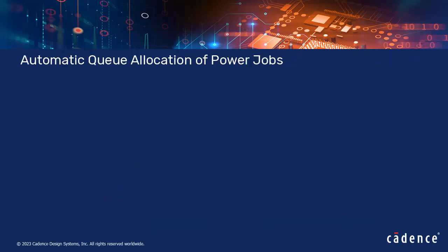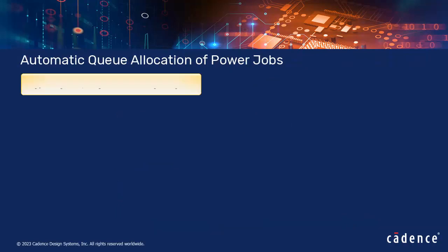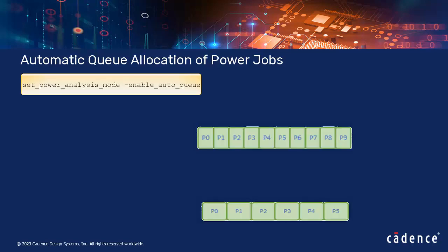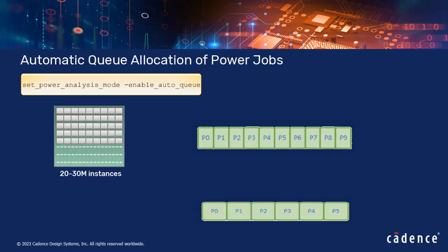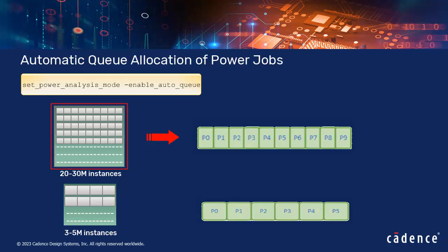You can now automatically determine the queue for power jobs using the EnableAutoQueue parameter of the SetPowerAnalysisMode command. This parameter is beneficial when there are uneven power block partitions — for example, if some blocks have 20 to 30 million instances while others have only 3 to 5 million instances. Using this feature, bigger blocks will be automatically assigned to a bigger queue and smaller blocks to a smaller queue, resulting in better runtime.